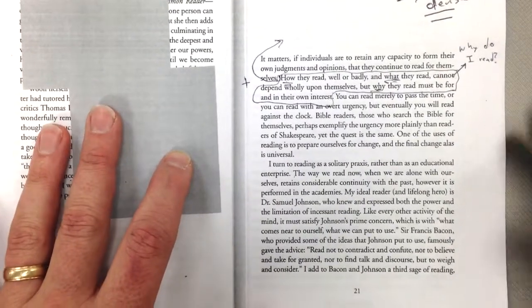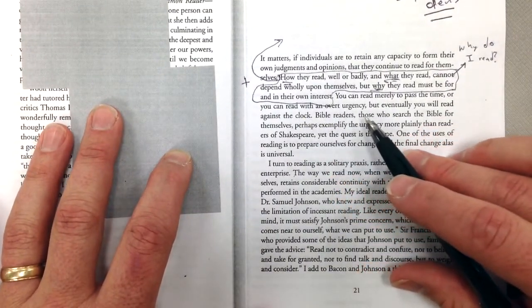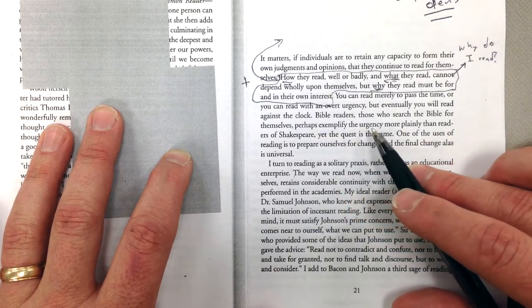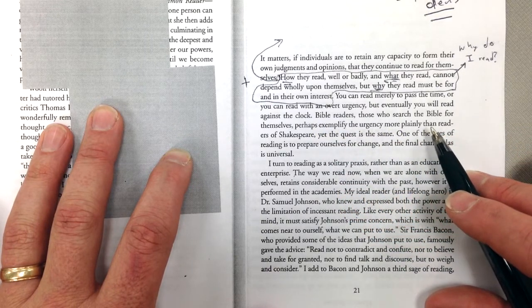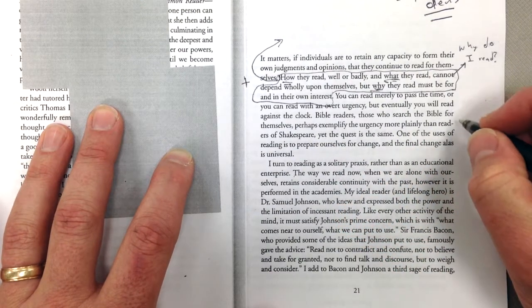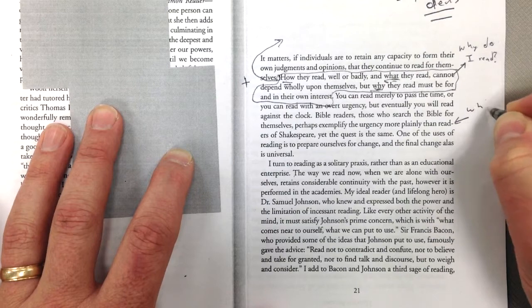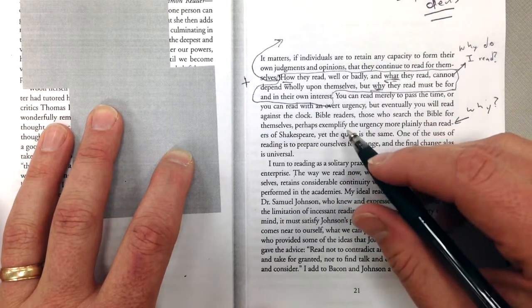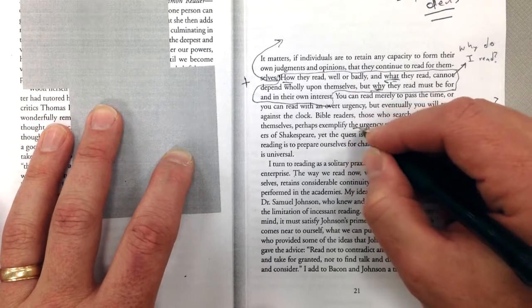A question for you. So this sentence here, Bible readers, those who search the Bible for themselves, perhaps exemplify the urgency more plainly than readers of Shakespeare. So if you don't get that sentence, read it until you understand it. What is he talking about? Why does that mean? What is he talking about when he talks about this urgency?